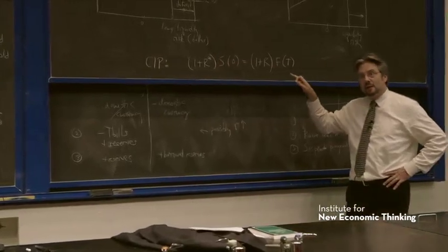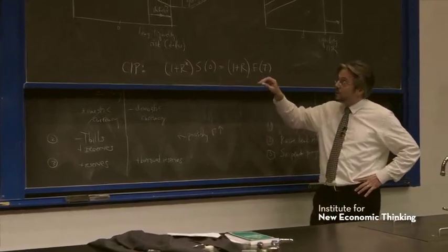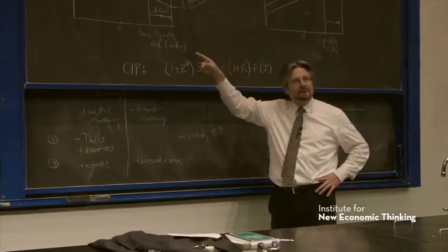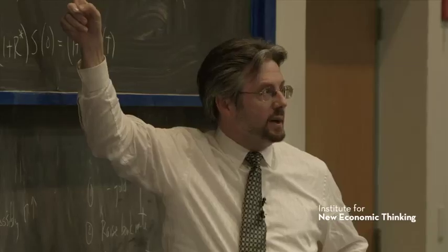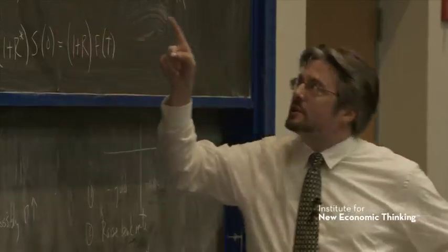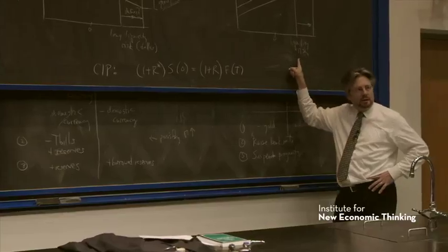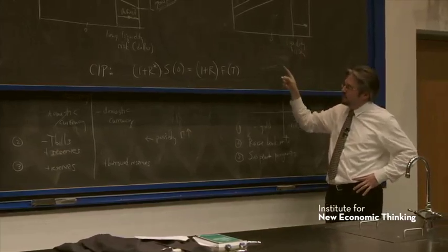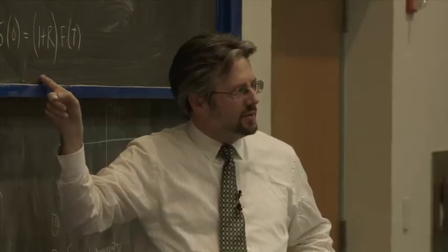This is going to be the key relationship that we're going to use next time when we translate, when we start to think, well, what version of that diagram is appropriate in a world without the gold standard? And where is the outside spread going to come from? And what version of that diagram is appropriate in a world without the gold standard? What's on the axes and so forth? It's going to be covered interest parity that is going to be helping us do that translation.